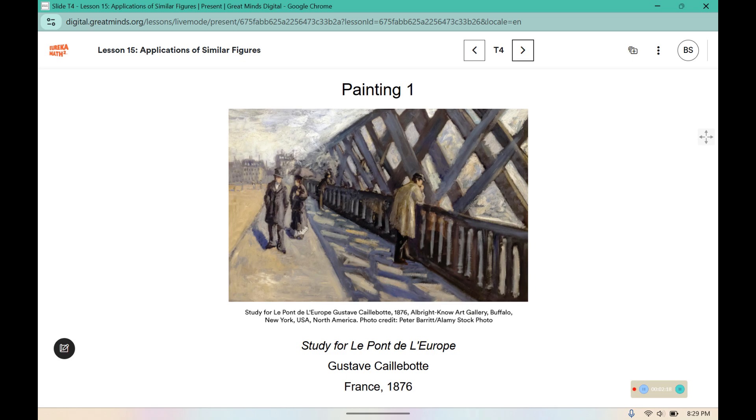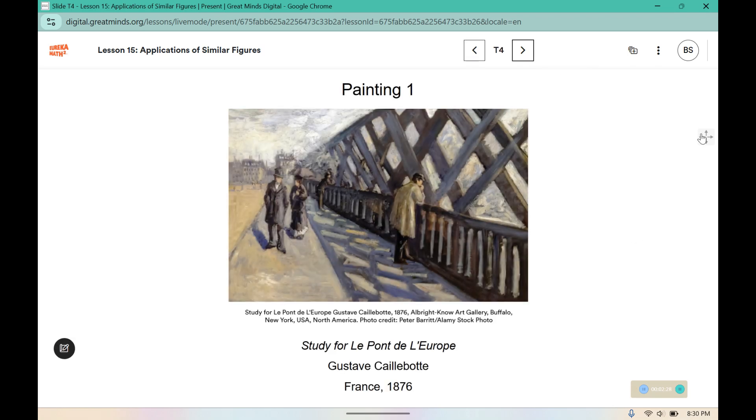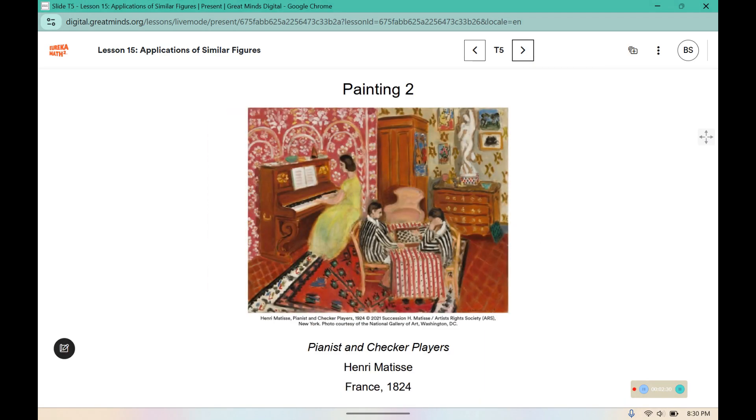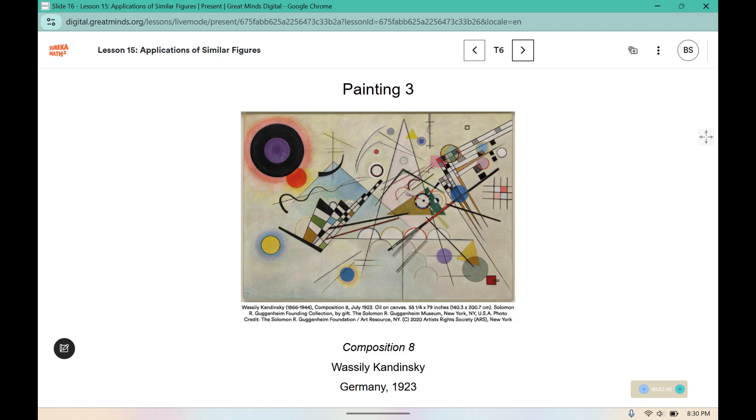Category 1 also has some depth to it, so you would place it in Category 2 like the other two paintings. This one also has some depth. You can see that the furniture in the background looks like it's farther away than the foreground, whereas this one appears to be flat. So this one you could say is 2D, so it would fit into Category 1.